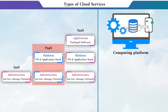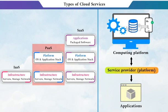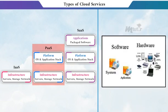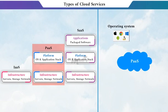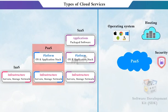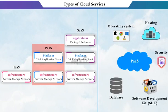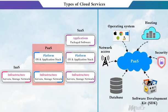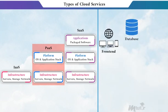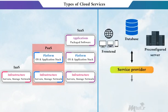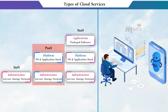The next cloud service is Platform as a Service. It provides computing platforms — that is, hardware and software tools available over the internet. It typically includes an operating system, hosting, security, software development kits, database backups, network access, and more. PaaS makes a pre-configured server and a front end with working databases available, so the customer can completely manage the development of apps.